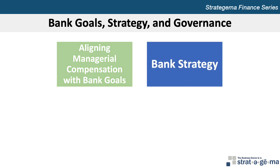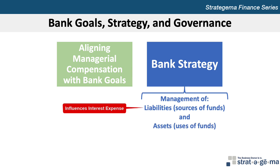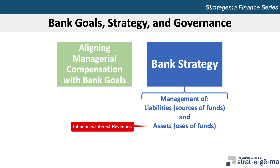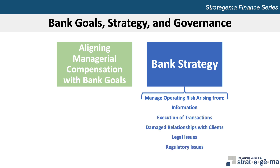A bank's strategy involves the management of its liabilities or sources of funds and its assets or uses of funds. Managerial decisions around fund sourcing will affect its income statement performance by heavily influencing interest expenses. Asset structure-related decisions will strongly influence its interest revenue on the income statement. The bank's asset structure also affects its operating expenses, and a bank must also manage the operating risk that results from its general business operations related to information, execution of transactions, damaged relationships with clients, legal issues, and regulatory issues.